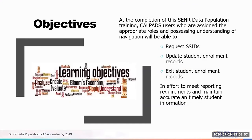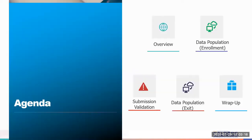Let's discuss some of the objectives for today. At the completion of today's training, you, the learner, will be able to request SSIDs, update student enrollment records, and exit student enrollment records — all in effort to meet reporting requirements and maintain accurate and timely student information within CALPADS.